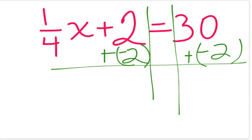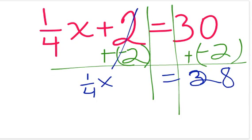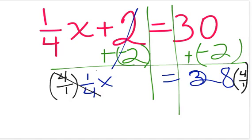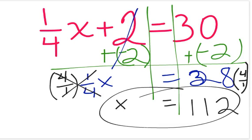On the left, we now have 2 plus a negative 2, which cancels out, leaving 1/4x by itself. On the right, we have 30 plus a negative 2, which is 28. Now we're going to use the same trick, multiplying by the reciprocal. The reciprocal of 1 over 4 is 4 over 1. So we now need to multiply 4 over 1 on the right side as well. 4 divided by 4 cancels, 1 divided by 1 cancels, leaving x by itself. 28 times 4 equals 112. x equals 112.